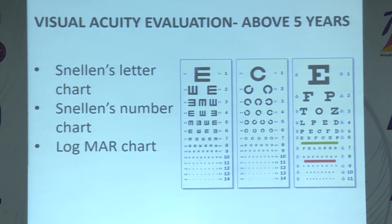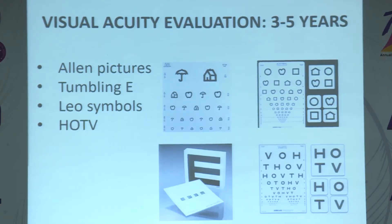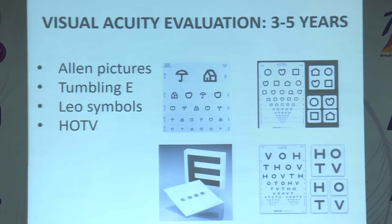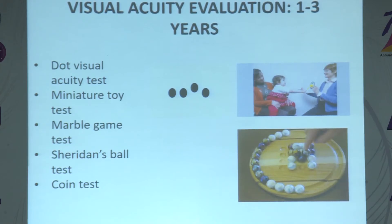Testing visual acuity in children above five years is usually not a problem because they are verbal. We can use Snellen letters chart, Snellen number chart, logMAR chart, or any other chart. In children aged three to five years, we can easily assess visual acuity using Allen picture charts, tumbling E charts, LEA symbols, or HOTV charts.